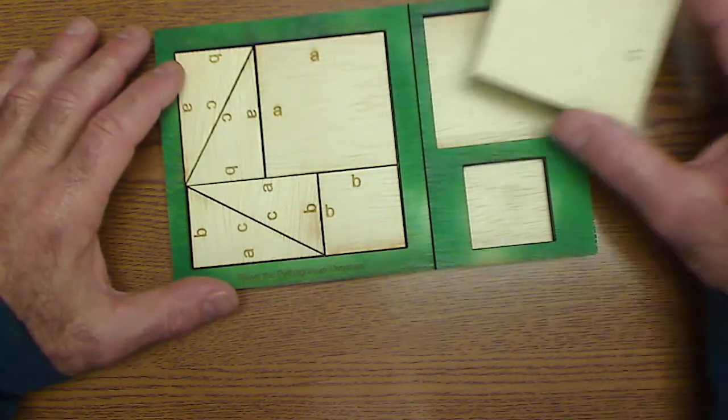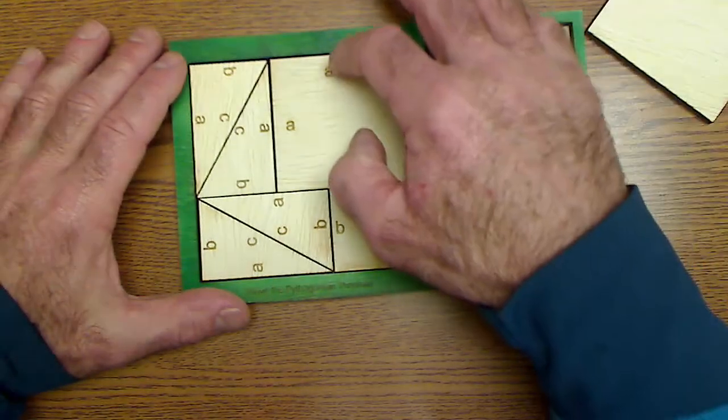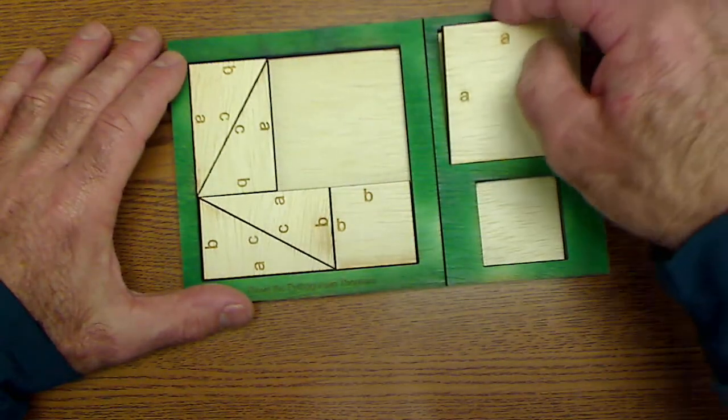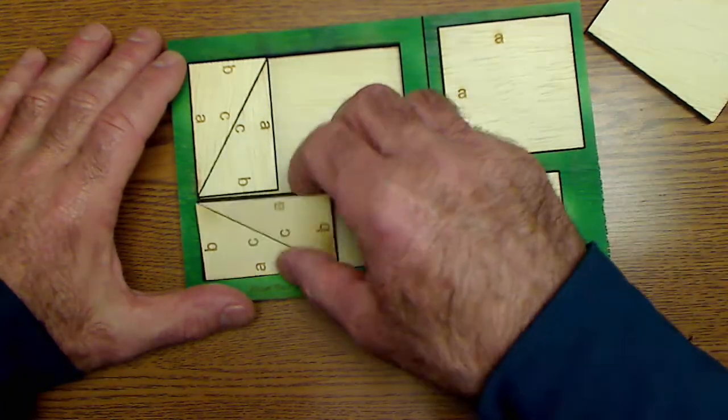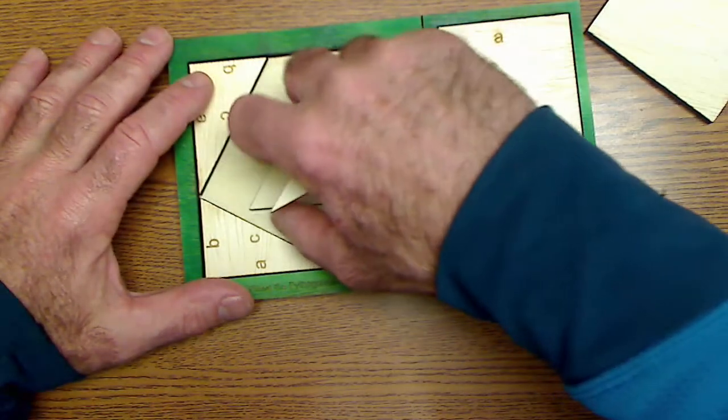So it's kind of a cool way to prove the Pythagorean theorem. Algebraically it's pretty tough, but geometrically when you play with these pieces it makes a lot of sense.